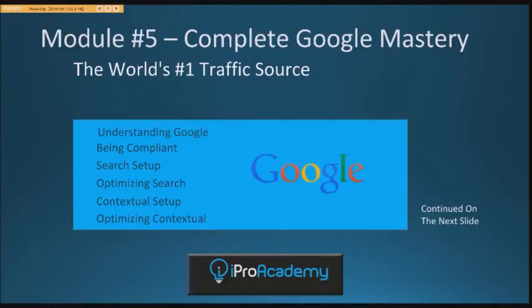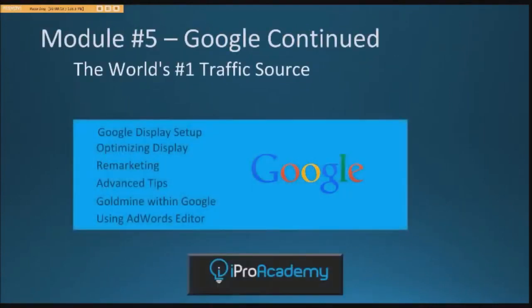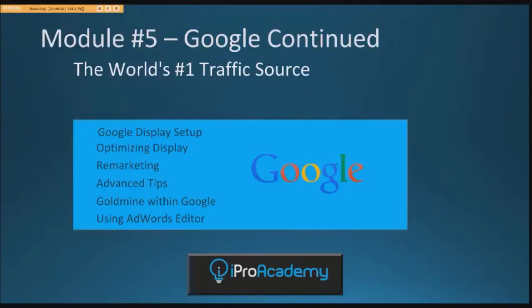Module 5 also covers hidden features within Google that can increase your ROI, how to scale your search campaign, what Google's contextual network is, setting up your first contextual ad, hidden features to be aware of, and key elements to optimize contextual ads and increase your return on investment.